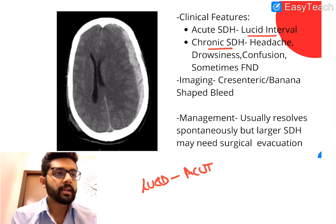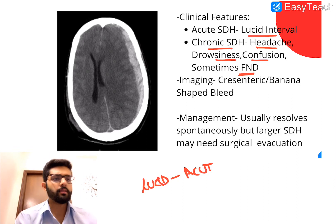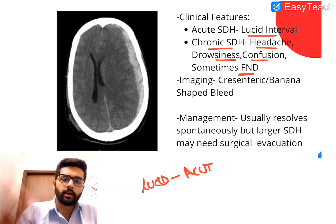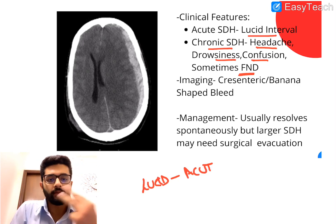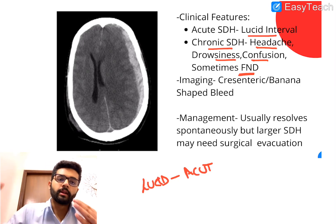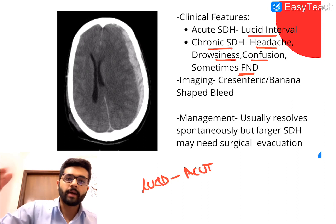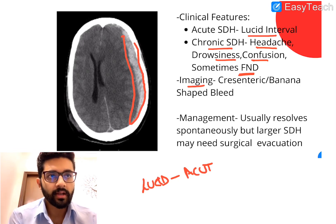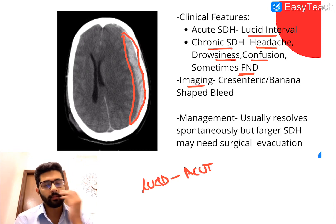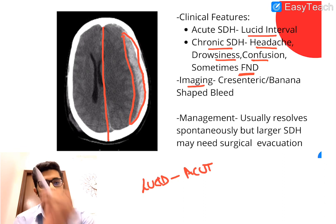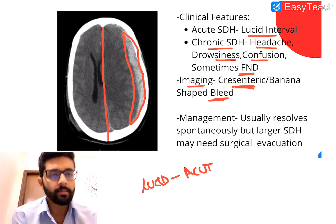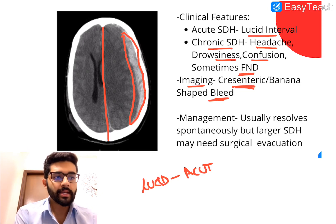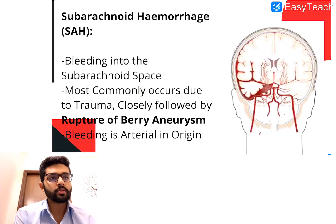Chronic SDH has a slow onset, and symptoms typically come weeks to months after the history of trauma. The patient may present with confusion and only when the doctor traces back will they discover the trauma history. On imaging, you see a crescent-shaped or banana-shaped hemorrhage, and midline shift is less typical for SDH than EDH. Smaller bleeds often resolve spontaneously, but larger SDHs may require surgical evacuation.